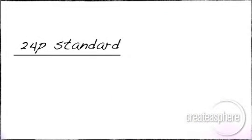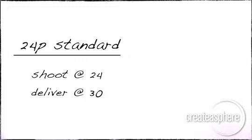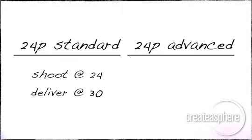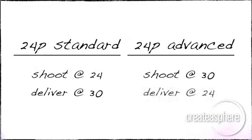Likewise if you're shooting 24p standard, you're going to be able to record with the 2-3 pull down in it and actually record 24 frames at 30. And that's going to enable you to have the aesthetic of 24 frame image with a 30 frame time base. So you want to shoot 24 standard if you want it to look like 24 but deliver it at 30 and you shoot 24p advanced if you want to acquire at 30 and make it deliver at 24.